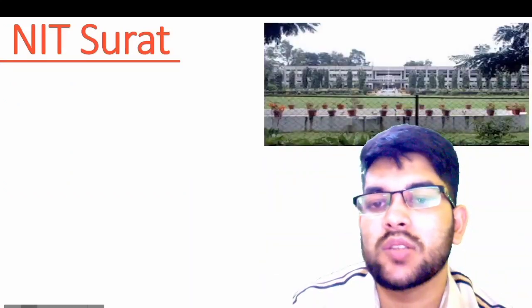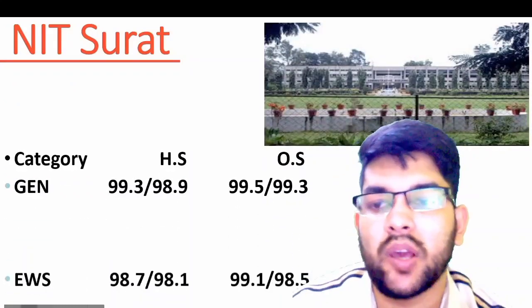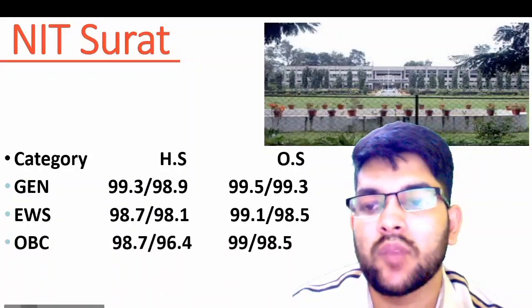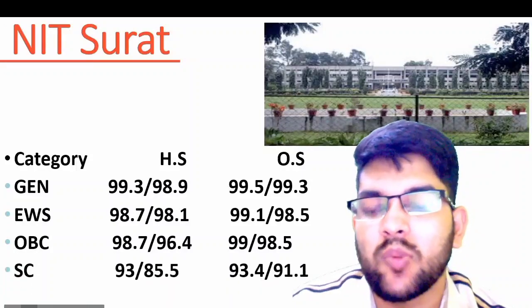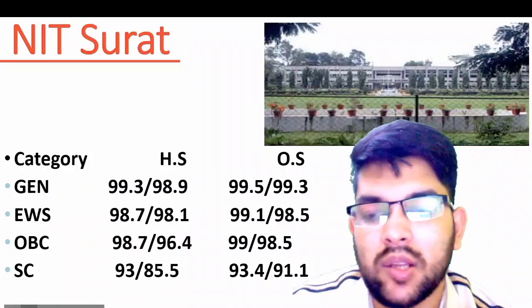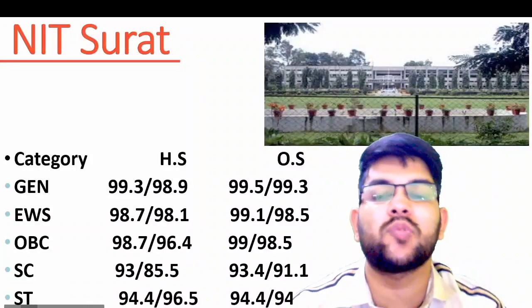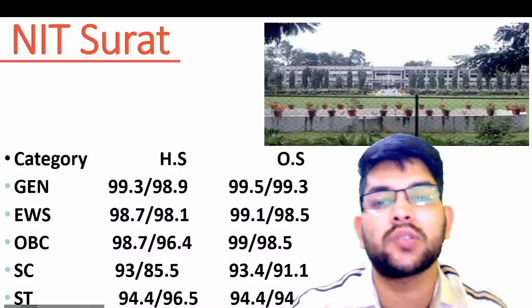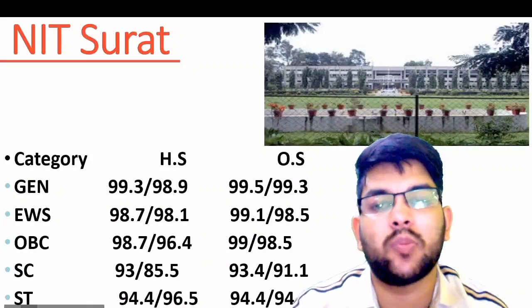Next is NIT Surathkal. Here is the information: for General home state 99.3, other state 99.5. For EWS: 98.7 and 99.1. For OBC: 98.7 and 99. For SC: 93 and 93.4. For ST: 94.4 and 94.4 — again for home state and other state. The ranking of a college is not only decided based on the cutoff but also on campus life and all other factors.